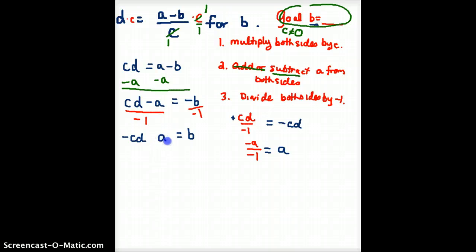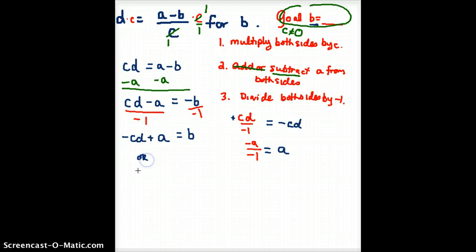Now, you can't just write A here. You have to write the plus. Or another acceptable solution would be to write A minus CD equals B. Both of these are correct, and either of these should be considered the correct answer.